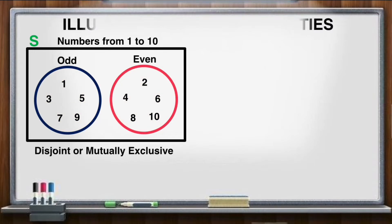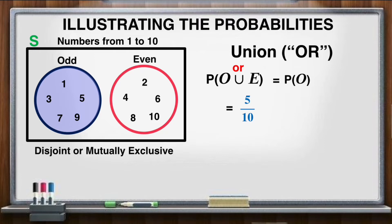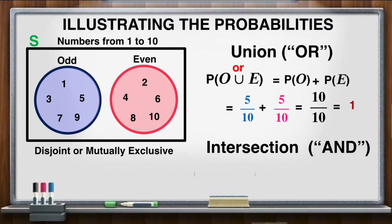Let's illustrate their probabilities. For the union of events, we have probability of O union E — in words, that is probability of odd or even. That is equal to probability of odd, the blue region, that is 5 out of 10, plus the probability of even, the pink region, that is 5 over 10. So 5 over 10 plus 5 over 10 equals 10 over 10, or equal to 1. For the intersection of events, since this is a disjoint or mutually exclusive event, the intersection of O and E is null. So the probability of O intersection E is equal to 0.